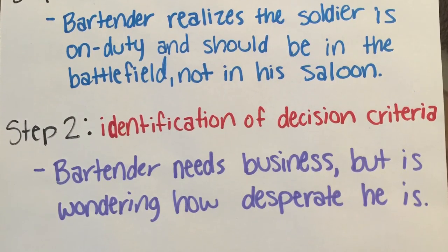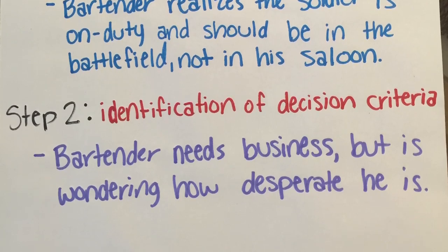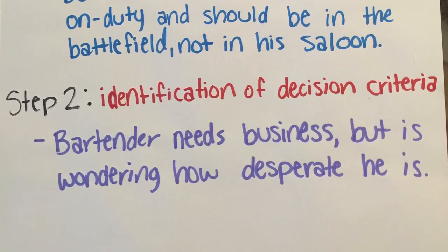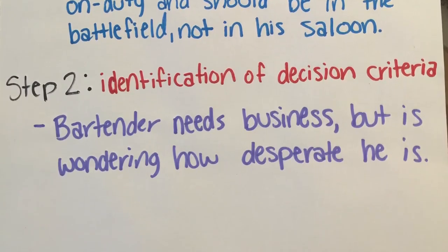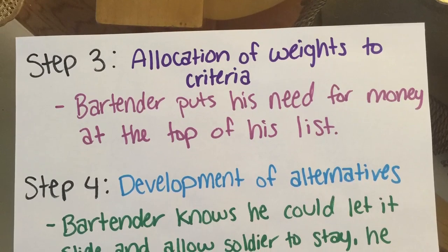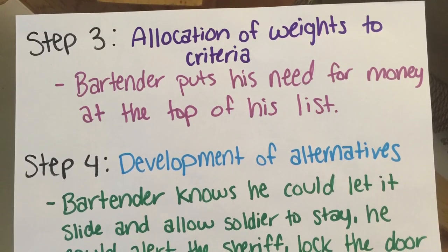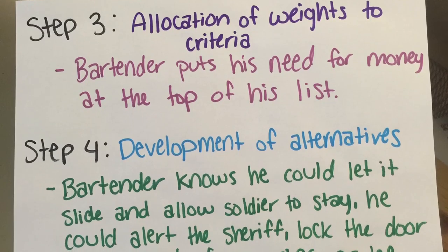Step 2: Identification of decision criteria. The bartender needs business but is wondering how desperate he is. Step 3: Allocation of weights to criteria. The bartender puts his need for money at the top of his list.